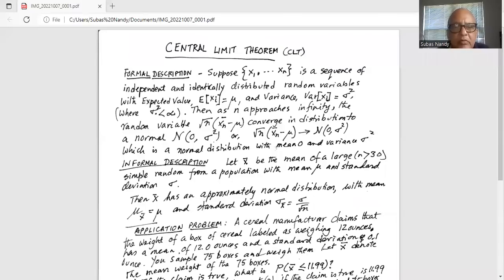Central Limit Theorem, the more formal description of it. Suppose x1 through xn is a sequence of independent and identically distributed random variables with expected value E(xi) equal to mu and variance Var(xi) equal to sigma squared.